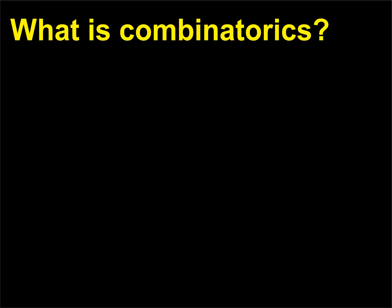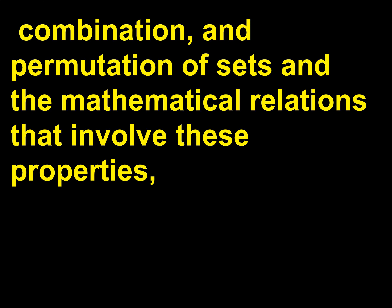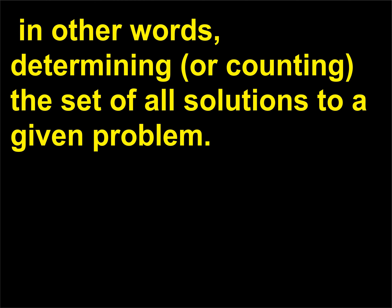What is combinatorics? Combinatorics is a branch of mathematics, overall called combinatorial mathematics, that studies the enumeration, combination, and permutation of sets and the mathematical relations that involve these properties. Enumeration: sets can be identified by the enumeration of their elements — in other words, determining, or counting, the set of all solutions to a given problem.